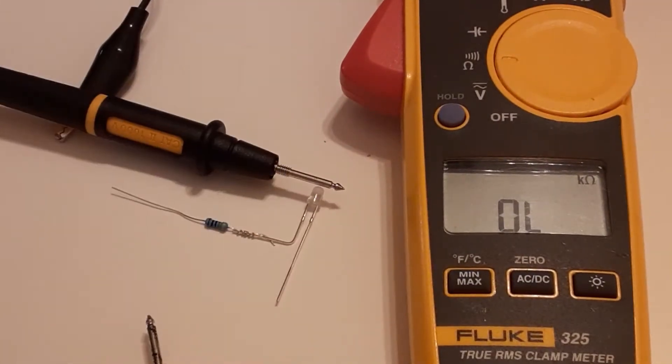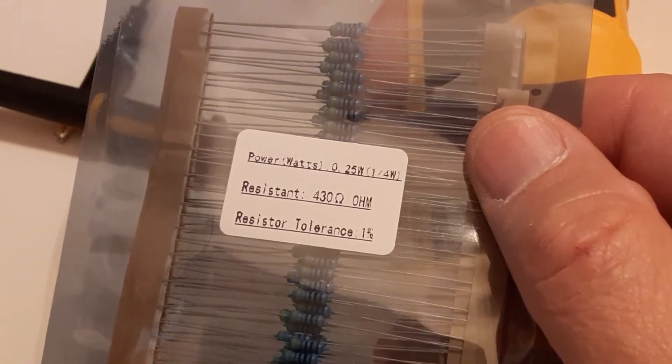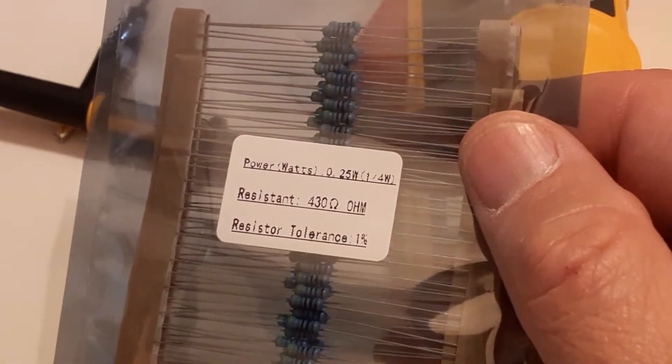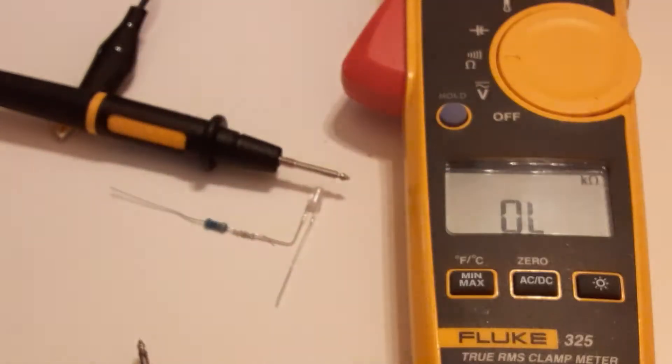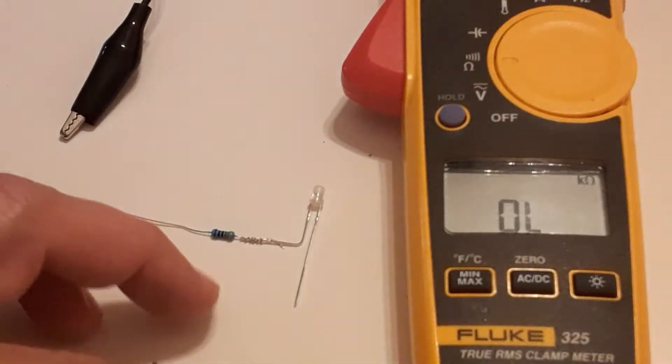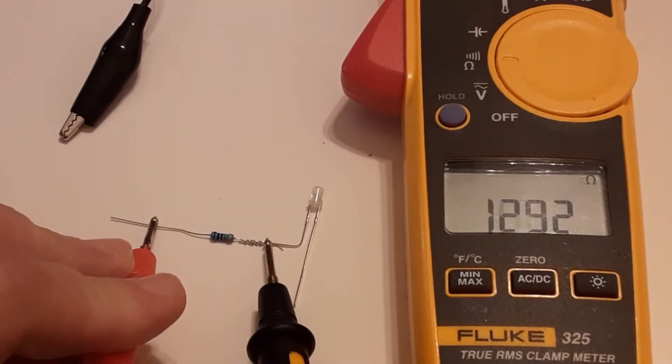So the package said 430. Let me bring that back into the picture. 430 ohms. 1% tolerance. That's impressive. 1% of 430 is 4.3. So it could be as low as 426 or so and still be within their 1% tolerance.